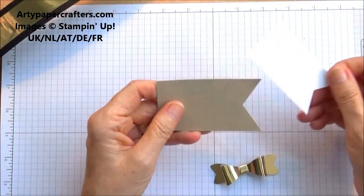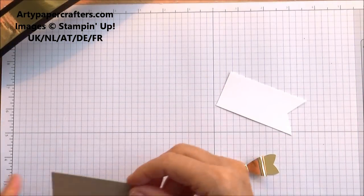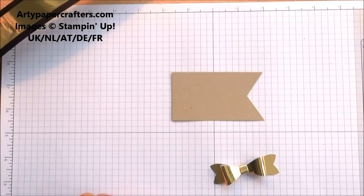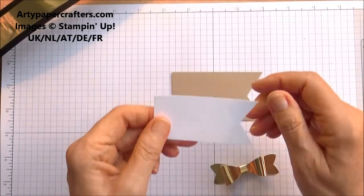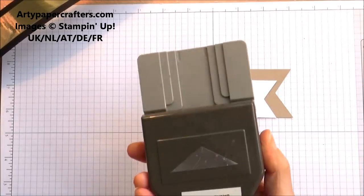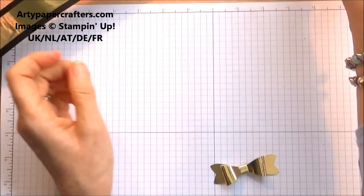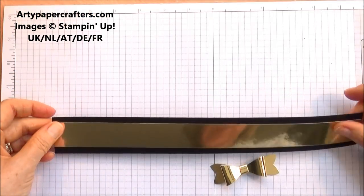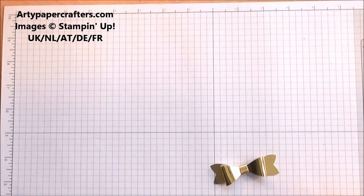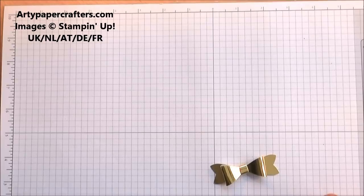Then I've got a piece of crumb cake cardstock here which measures 3 and 3/4 by 2 inches and a piece here which measures 1 and 1/2 inches by 3 and 1/2 inches. I just used my banner triple punch to punch some little edges there but you can hand cut them. Then I've got a strip of basic black and I've layered onto it a piece of gold.